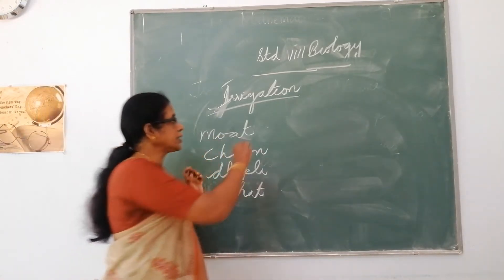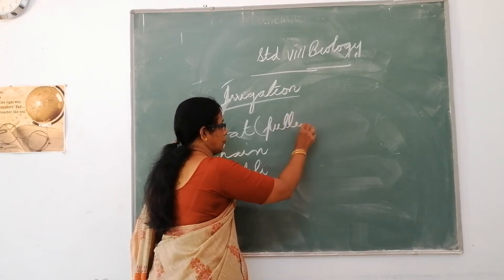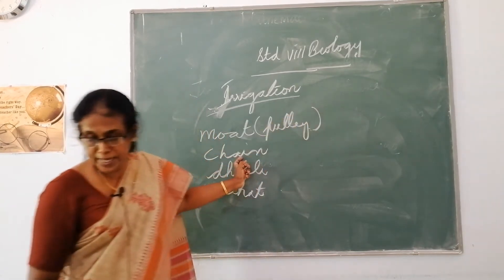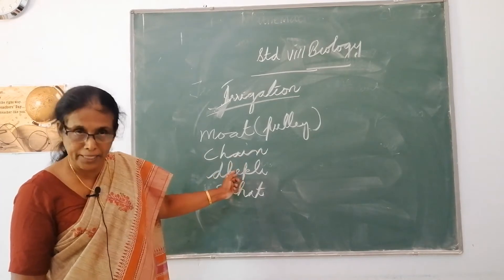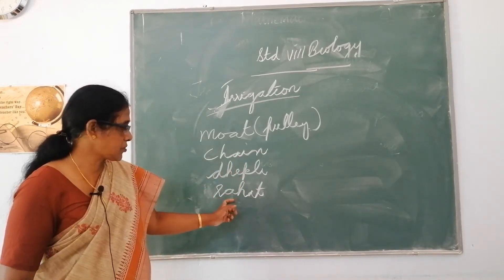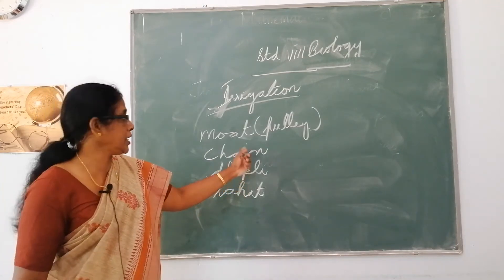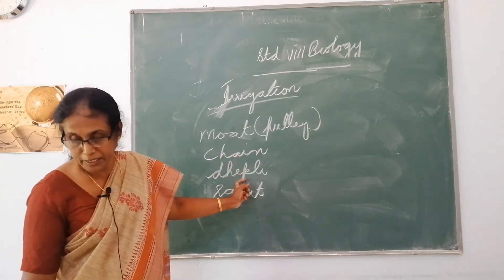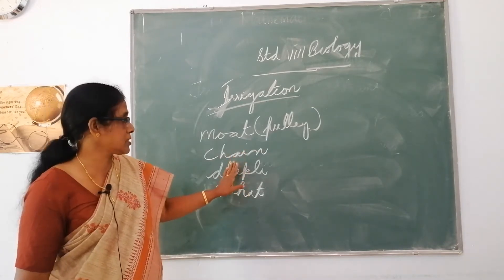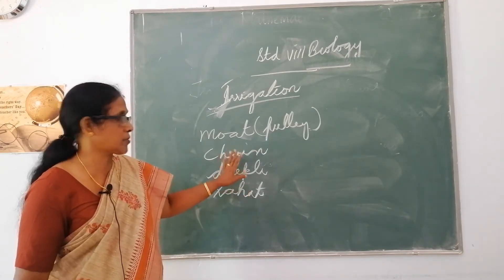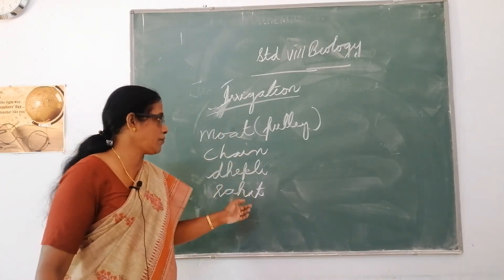The first traditional method is the moth, which is the pulley system, seen in your home. Then the chain pump, then the dhekli, and lastly the rahat system. These pumps are commonly used for lifting water. Diesel, biogas, electricity, and solar systems are used to run these systems. These are the traditional means of irrigation.